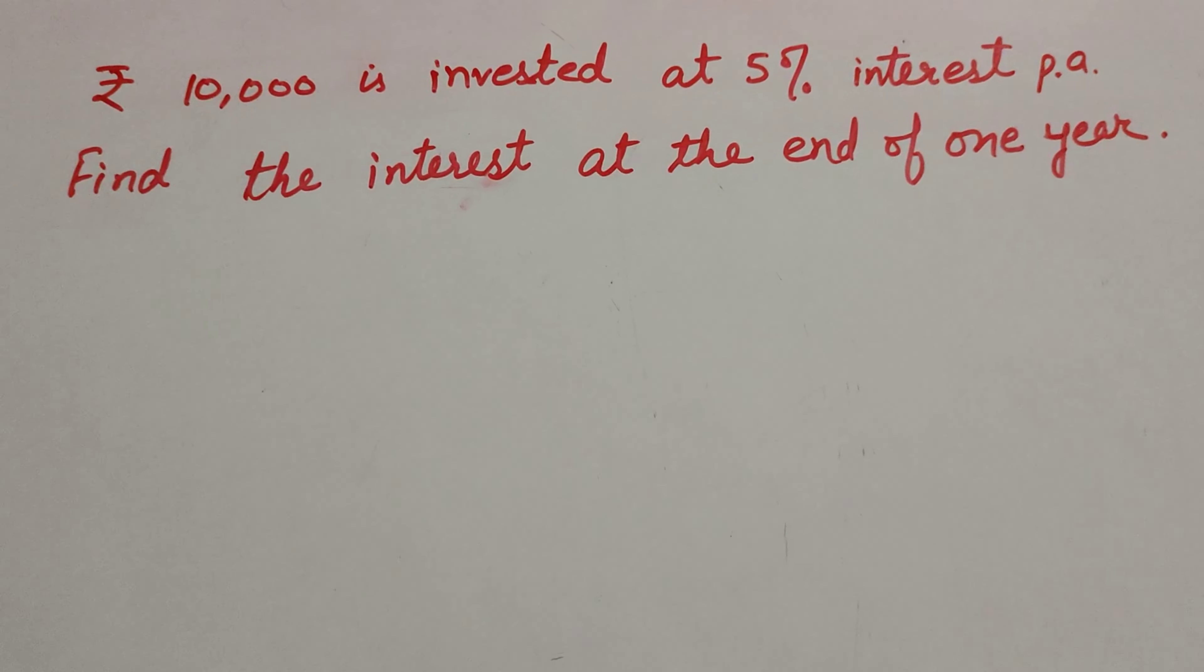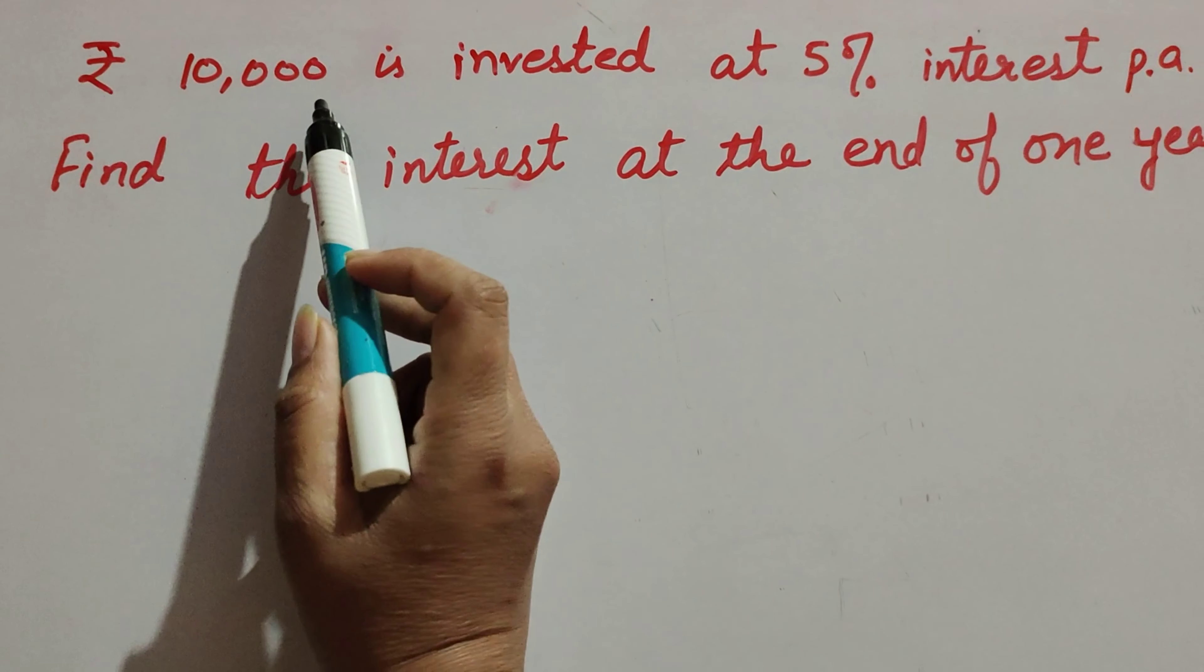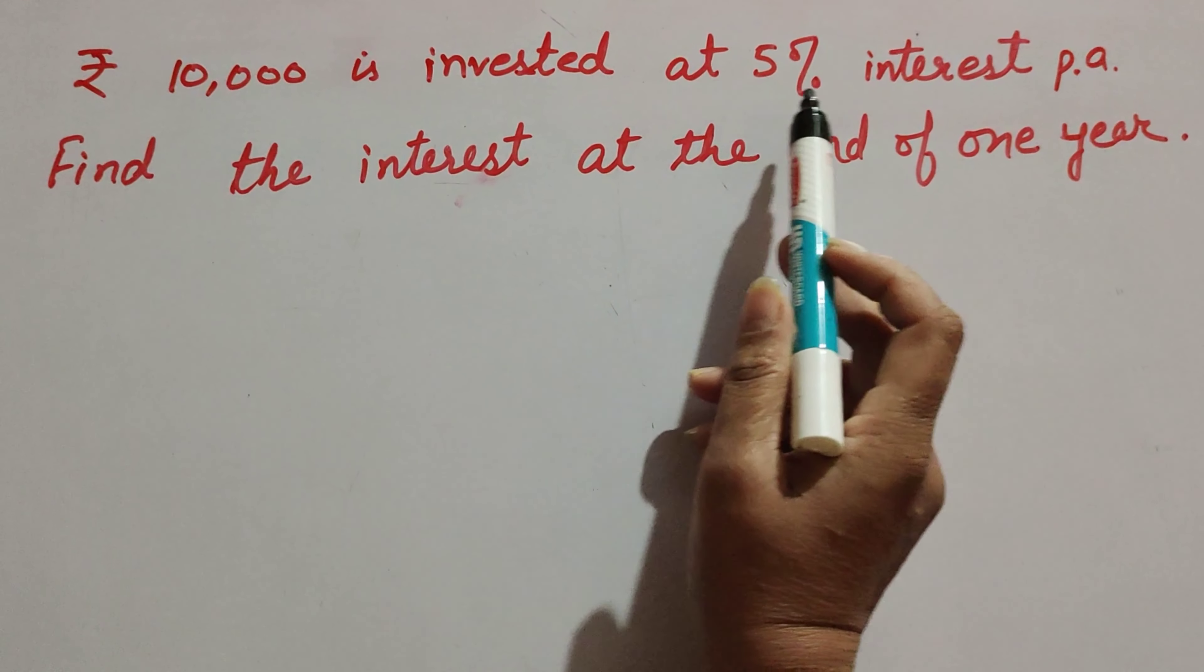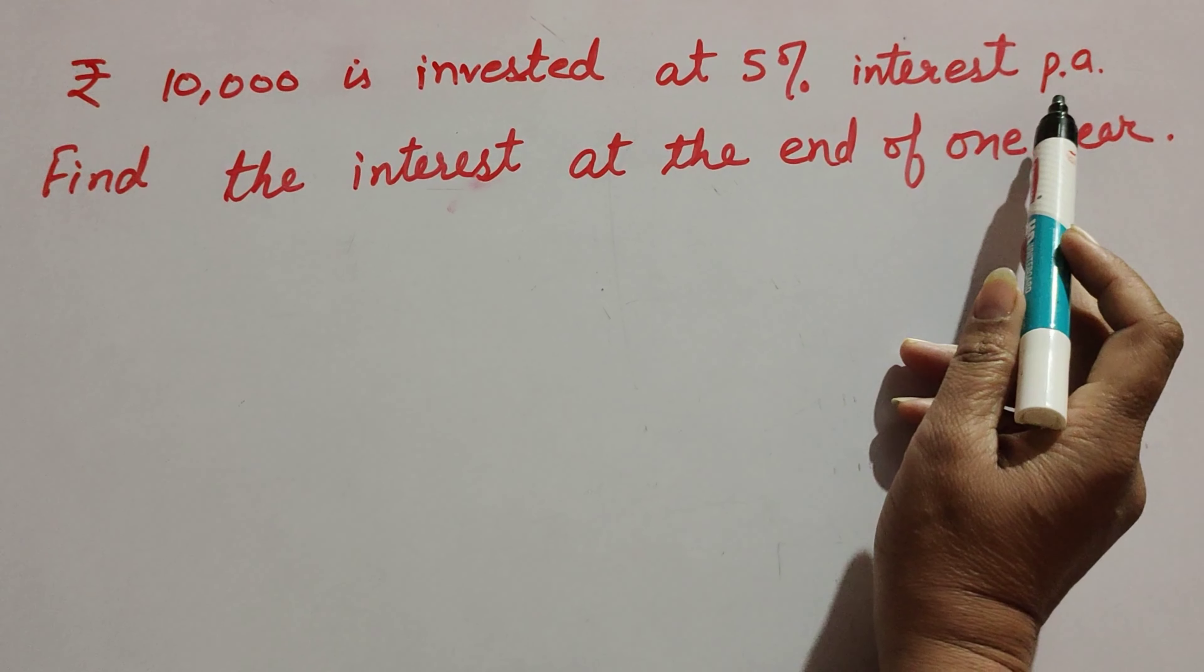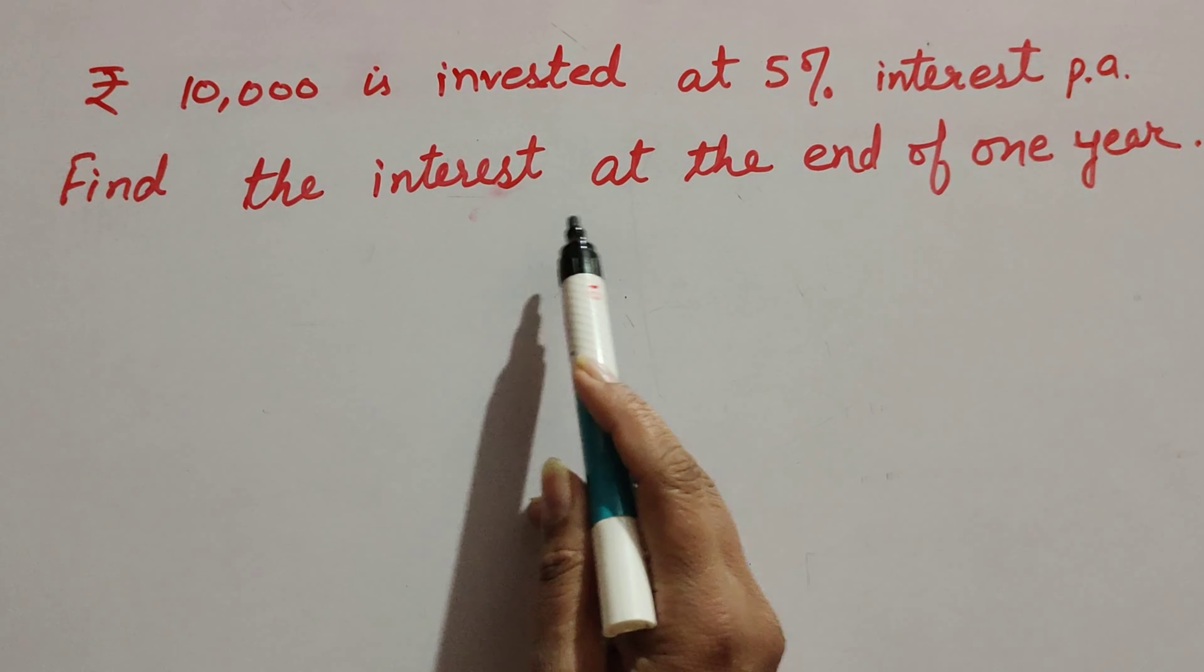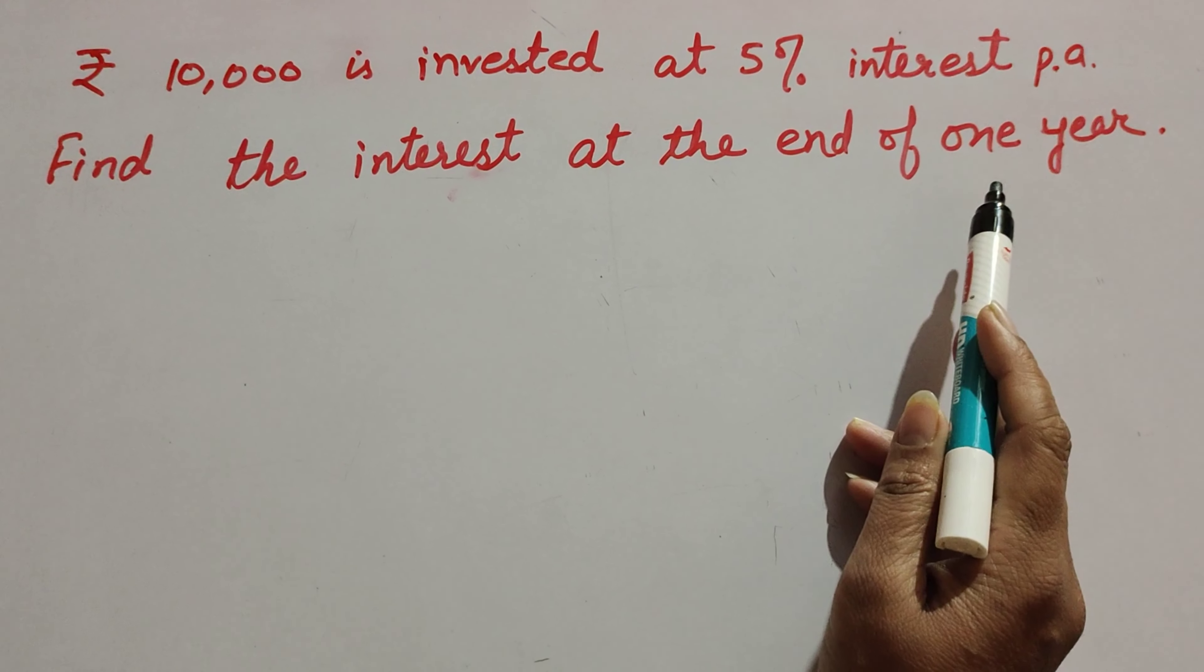Hello friends, welcome to my channel. In this video we discuss: rupees 10,000 is invested at 5% interest per annum. Find the interest at the end of one year.